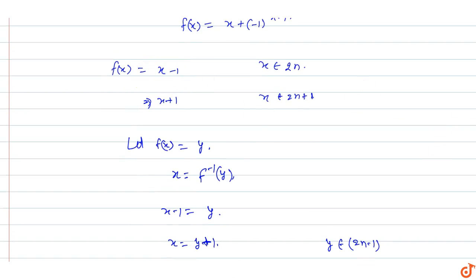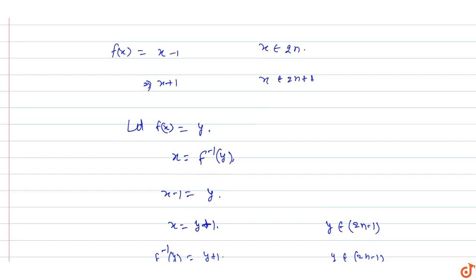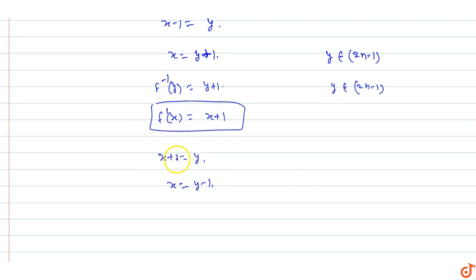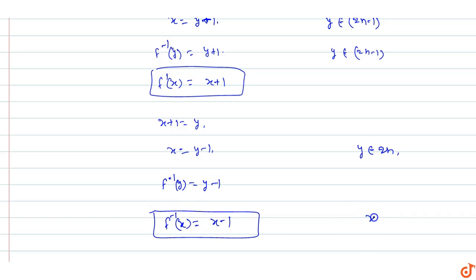Now for the other case: if f(x) = x plus 1 equals y, then x equals y minus 1. Here x is an odd number, so odd plus 1 is even, meaning y is an even number. Therefore in this case, f inverse of y equals y minus 1. So f inverse of x equals x minus 1 when x belongs to even numbers.